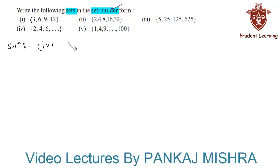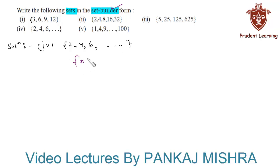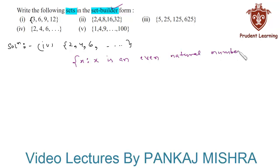The fourth set given to us is {2, 4, 6, ...}. The given set is nothing but the set of even natural numbers. So the given set can be written as: X such that X is an even natural number. This is the set builder form of the given set.